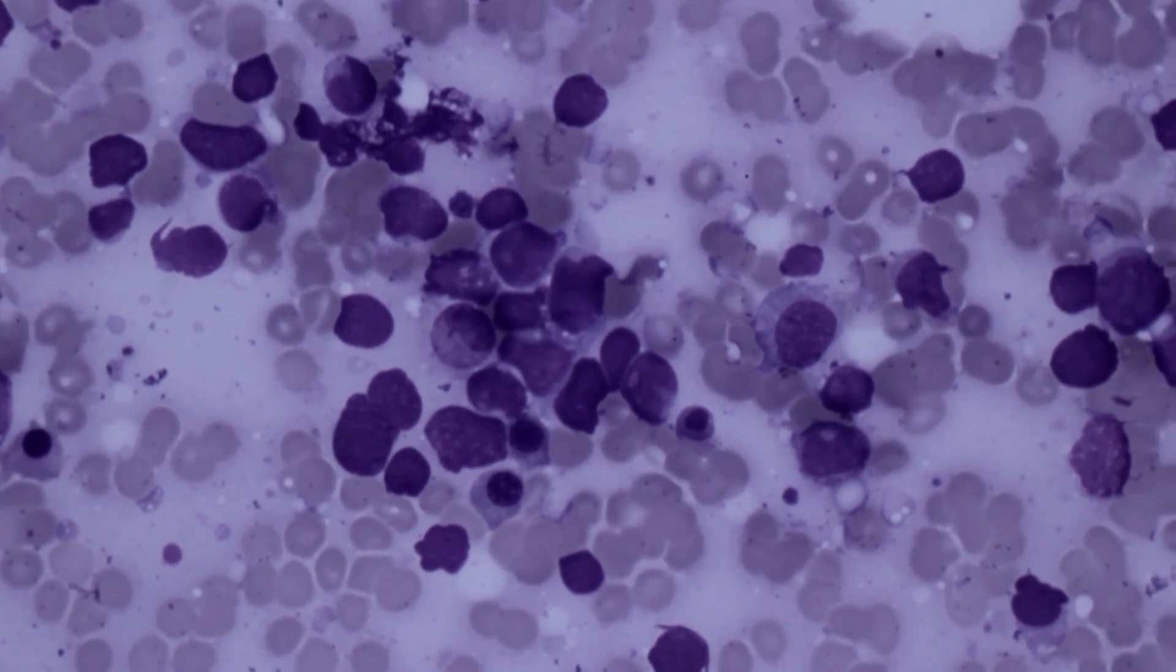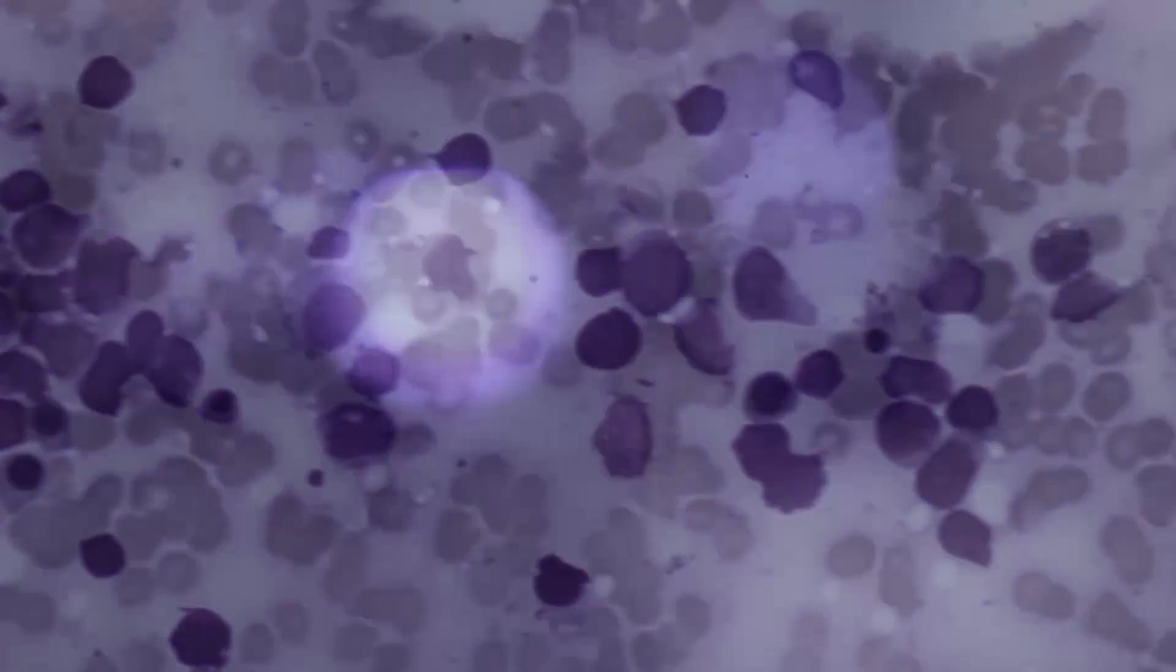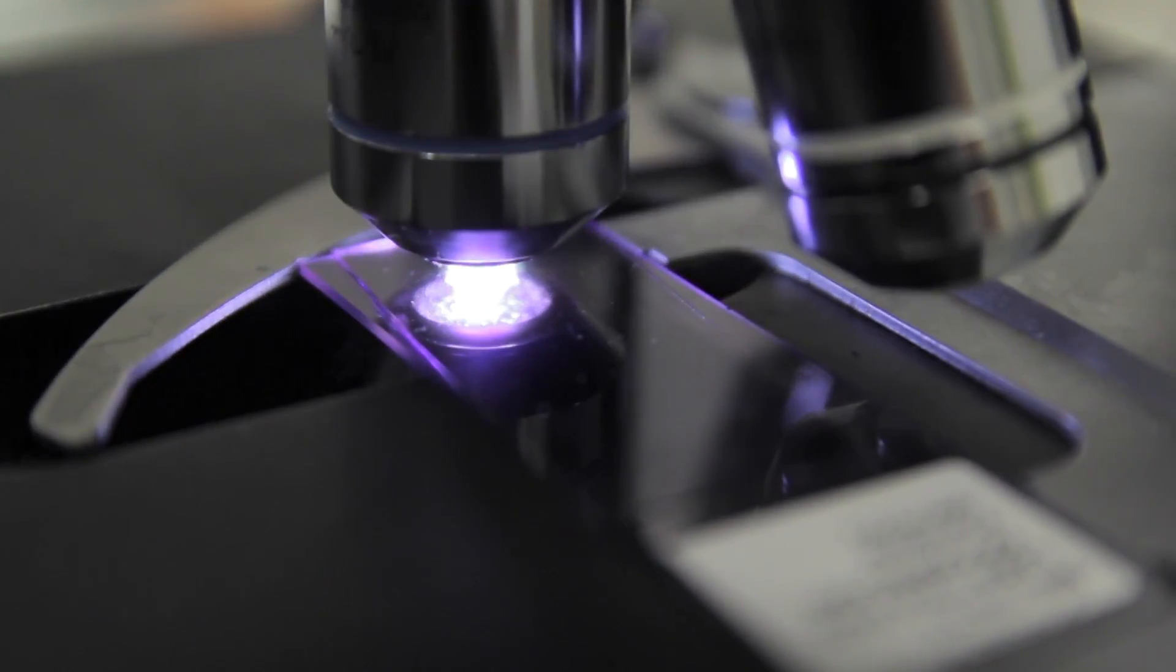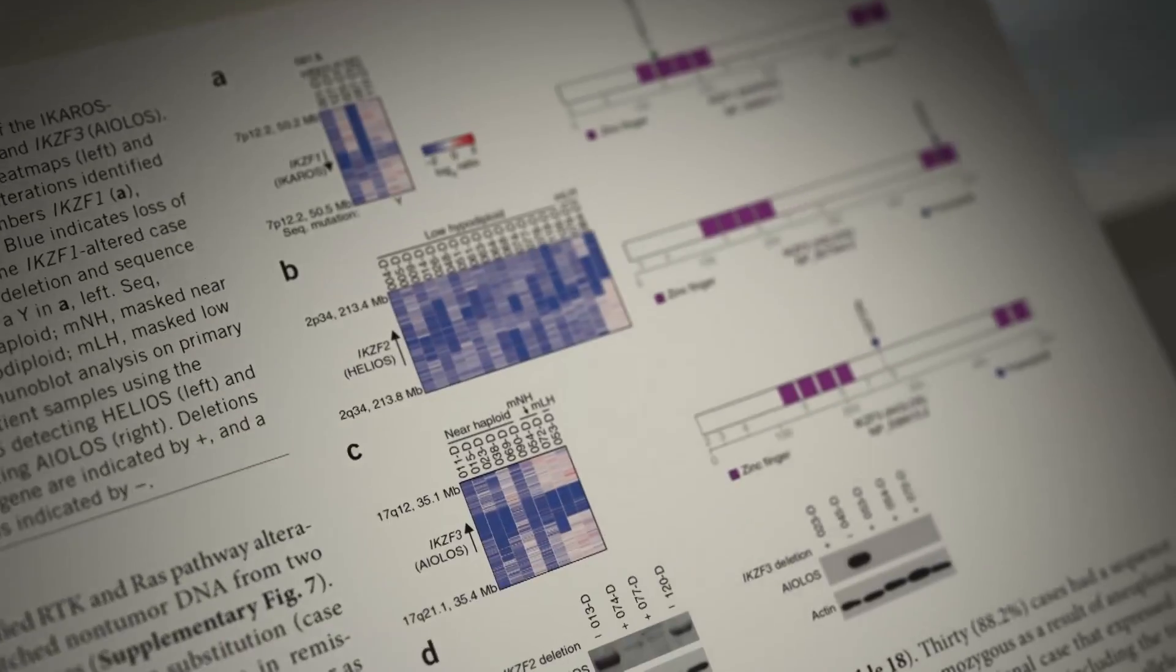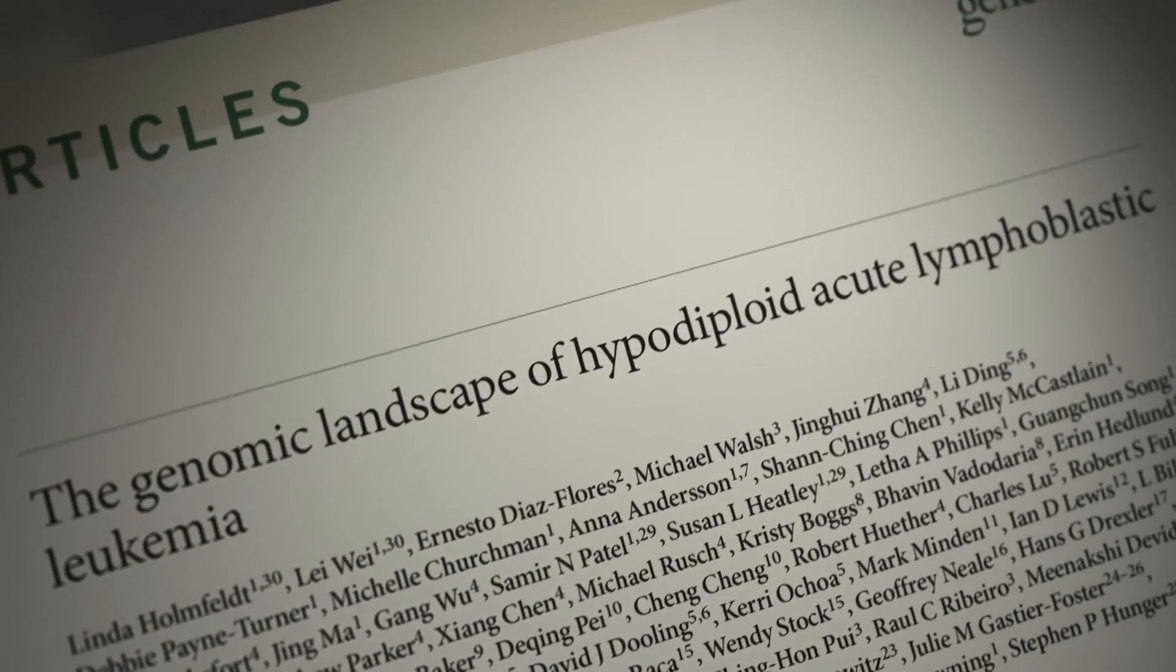Hypodiploid B-cell acute lymphoblastic leukemia is a subtype of childhood leukemia that has a very poor prognosis, and there is a big need to find new therapeutic approaches. We were able to describe the mutations that are found with hypodiploid leukemia, as well as protein alterations.